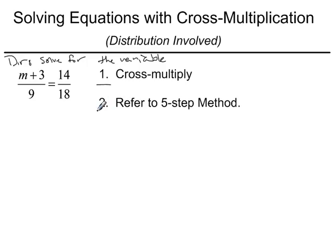The steps we would follow would be to one, cross multiply, and two, refer to the five-step method. So the five-step method becomes a little bit more involved here than in the previous example I did, which was a very basic cross multiplication. But let's get started.